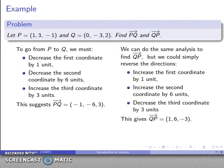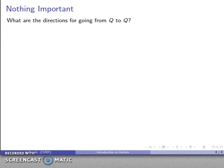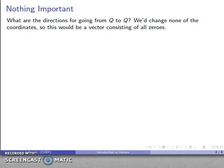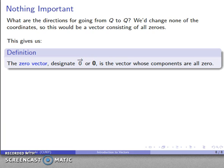We'll close with one final idea: what happens if I want to go from Q to Q—from a point to itself? We would change none of the coordinates, so this would be a vector consisting of all zeros. This is actually a useful idea for later on. This gives us what we call the zero vector—zero with an arrow over it or a boldface zero—a vector whose components are all zero.